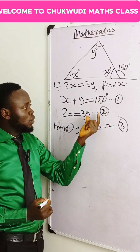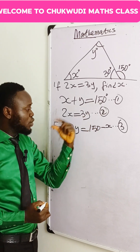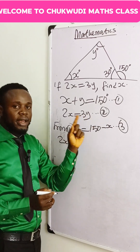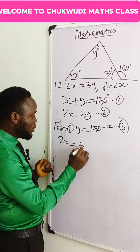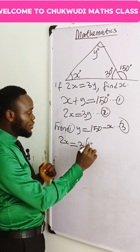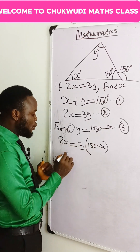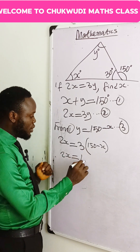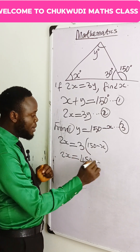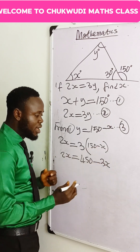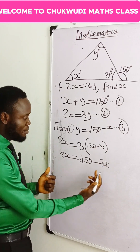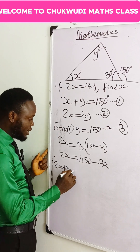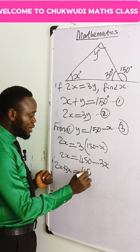Let's substitute equation 3 into equation 2. From equation 2, we have 2x is equal to 3y, and y is now 150 minus x. If we expand this bracket, 150 multiplied by 3 gives 450, minus 3 times x gives 3x. Collecting like terms, minus 3x comes to the left side, so we have 2x plus 3x is equal to 450 degrees.